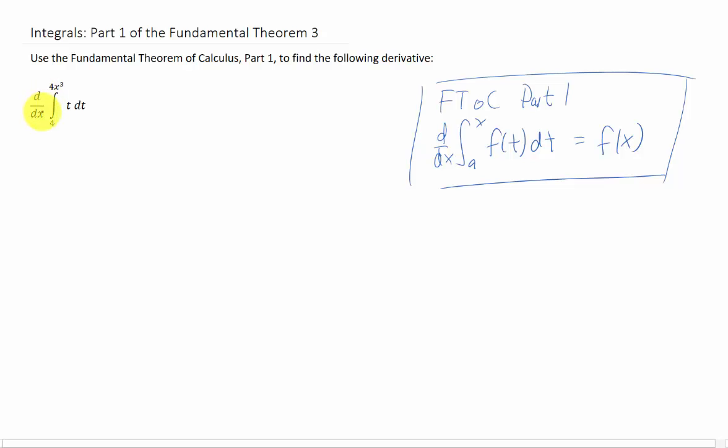Just like in the last two videos, we have a derivative of an integral. And just like video 2 in this series, we have an upper limit of integration that is a function itself. So what we have here with this integral is a composite function. We have 4x cubed plugged into this integral function. And when we take a derivative of that, we have to use the chain rule.